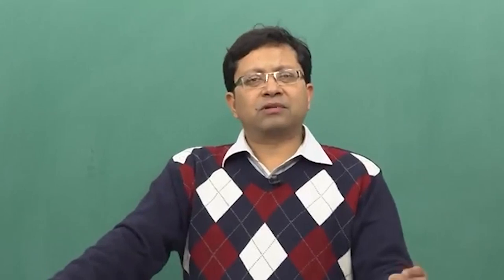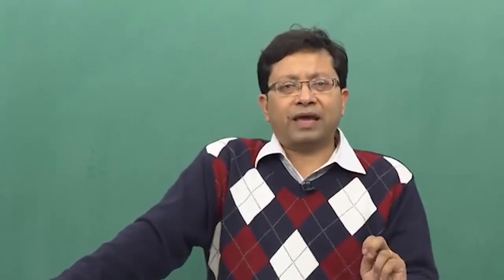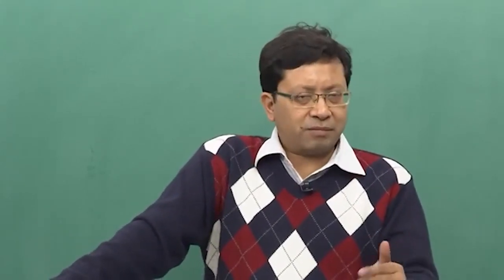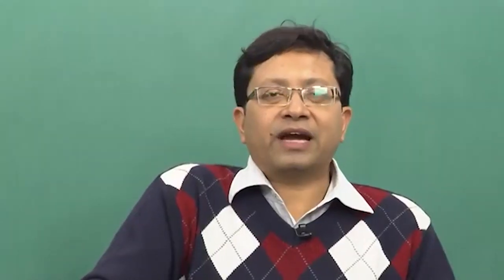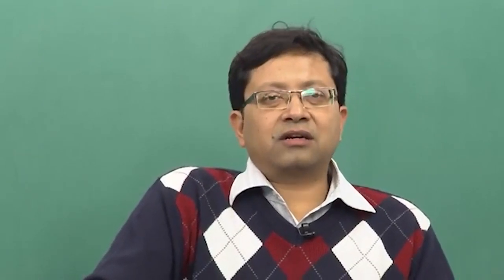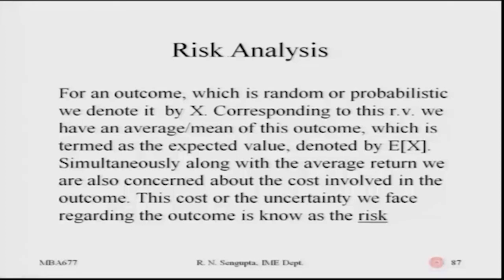For a random outcome — whether you are building a bridge, building a house, or taking a project to design a car — consider that as X, which is just a variable based on which you will do the calculation. We will use the concept of probability where X is a random variable. Corresponding to this random variable X, we have an average or mean value, which basically means what is on average the value you will get from X.